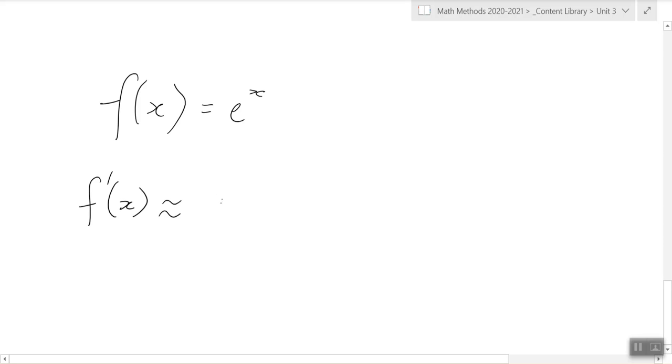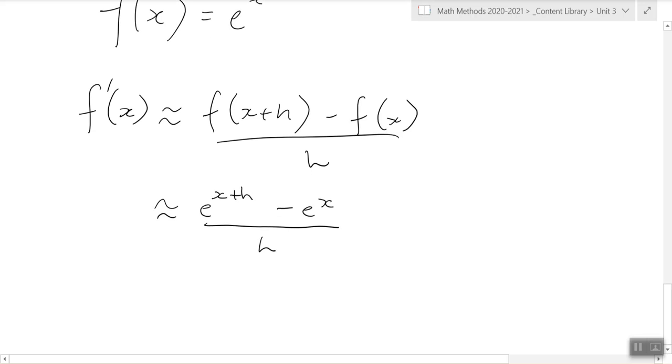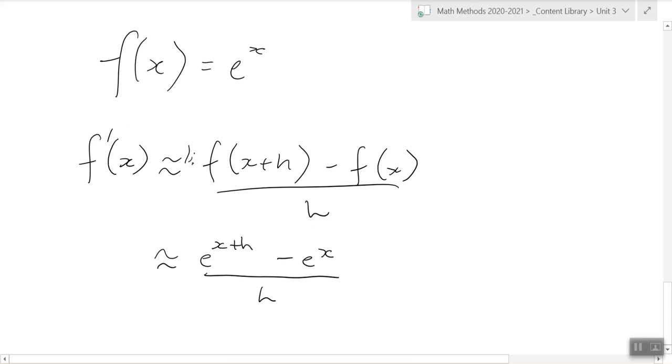So first principles: f(x+h) - f(x) over h. Alright? So the function with x plus h is e to the power of x plus h. The normal function is e to the x, and we have h on the bottom. Now, don't forget the limit h to 0.